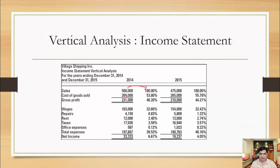Let's look at another example. Here we have considered sales as 100 percent and we are calculating every item of the income statement as a percentage of net sales. In this case, if sales is 100 percent then cost of sales is around 53 percent, wages are around 32 percent, rent is 2.4 percent, and other expenses are only 0.12 percent. If you want to compare across years, in 2014 cost of goods sold was 53.8 percent, but it increased to 55.79 percent in just one year.